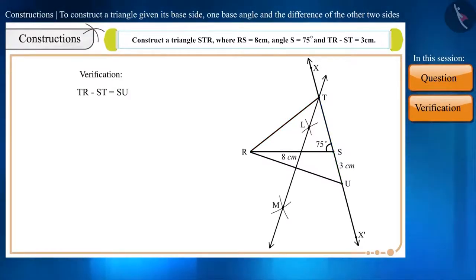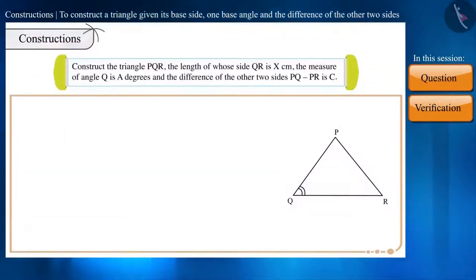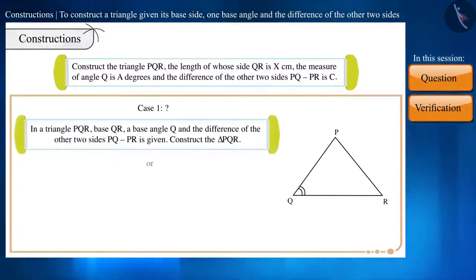So that's all in this session. But before leaving, try to answer one question. Construct the triangle PQR, the length of whose side QR is X cm, the measure of angle Q is Y degrees and the difference of the other two sides PQ minus PR is C. Here, we will do the construction of a triangle keeping in mind case 1 or case 2.